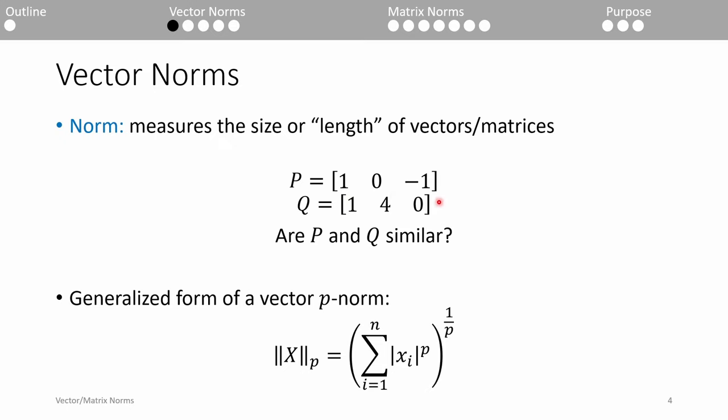Both vectors have a zero, albeit in different locations, so you could add that to your argument. You can easily argue that p and q are not similar for both of the reasons I just gave.